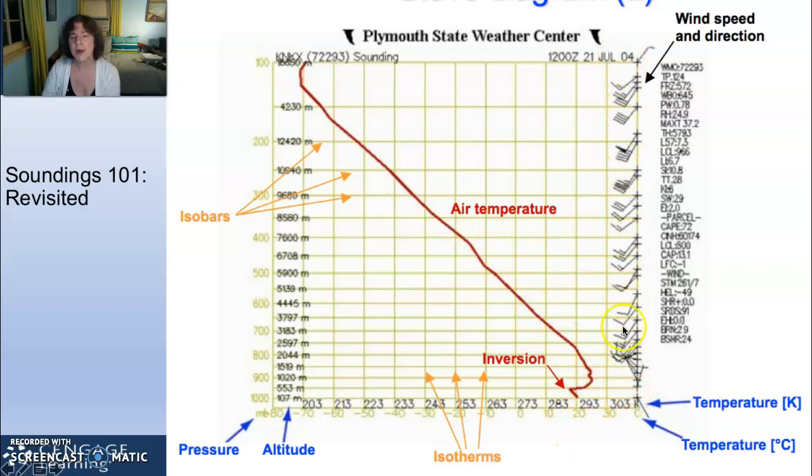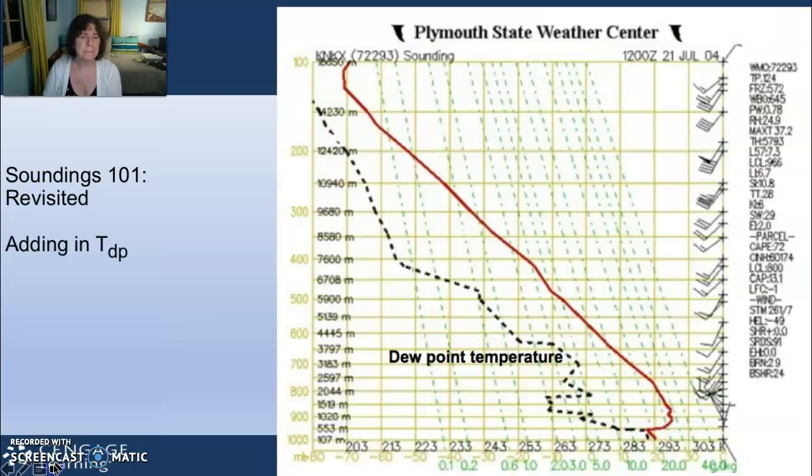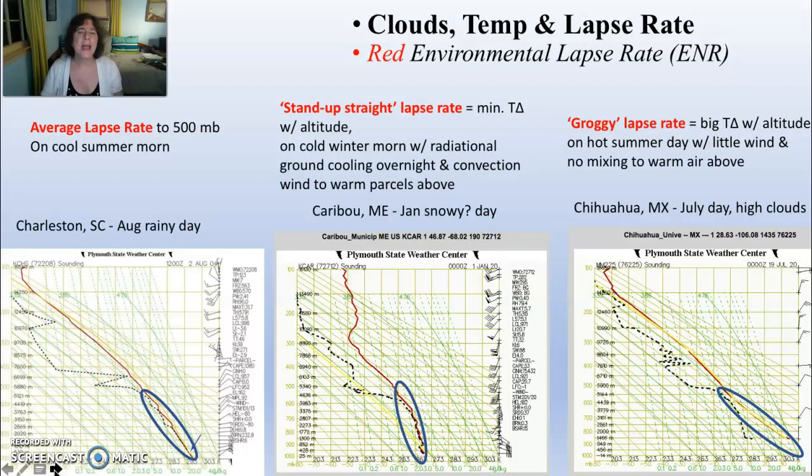You have isobars going horizontally for barometric pressure. You have isotherms going up and down for thermal lines from your temperature. Your environmental lapse rate is in red - generally it's the air temperature. You also have wind direction and wind speed on the y-axis on the right. Another thing - the dew point is always less than the environmental lapse rate. If it's not less, it's raining or precipitating.